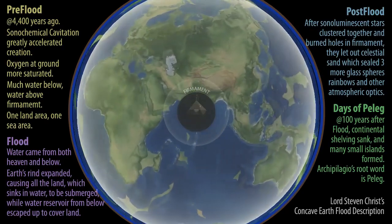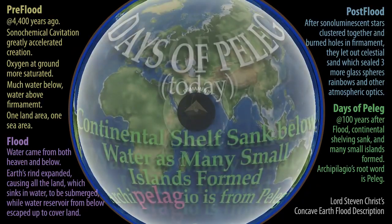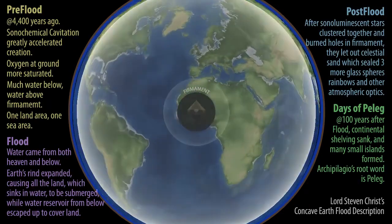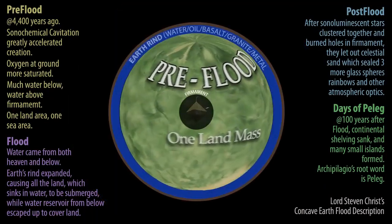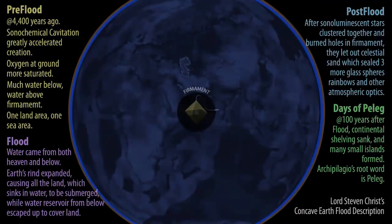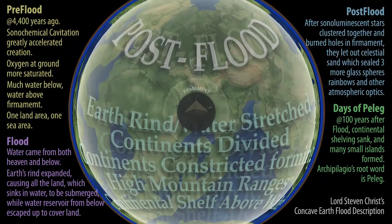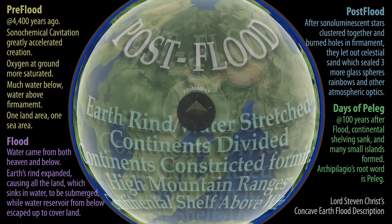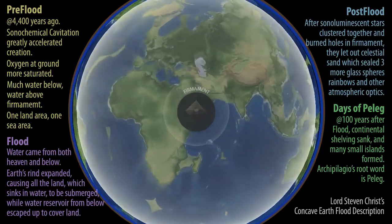Prior to the flood, there were giants in the land. Everything was bigger because of a hyperbaric condition within the atmosphere at ground level, where nitrogen was actually higher than oxygen — it stayed up above higher than the oxygen and didn't really reach humans, animals, or plant life. That hyperbaric condition allowed them to grow larger and live longer. When the flood happened, the sand came down and fused together, forming three separate glass bubble spheres.